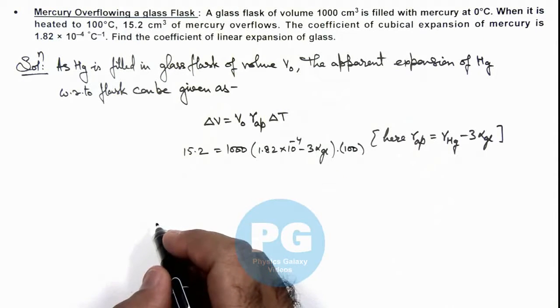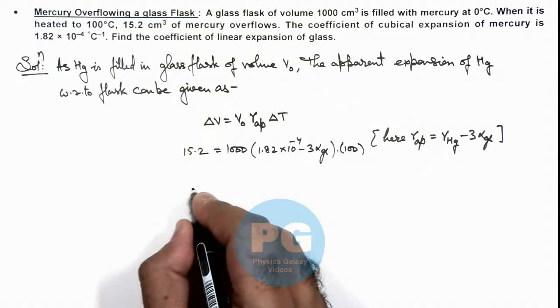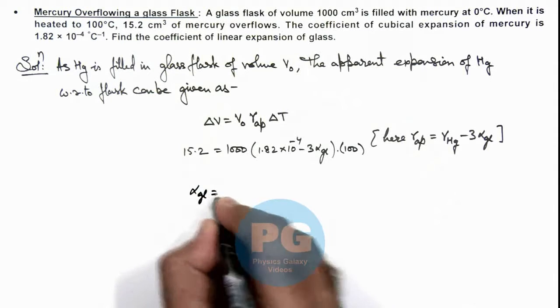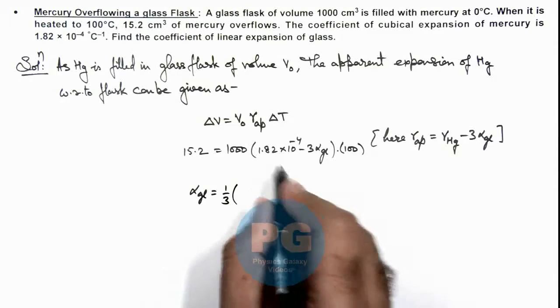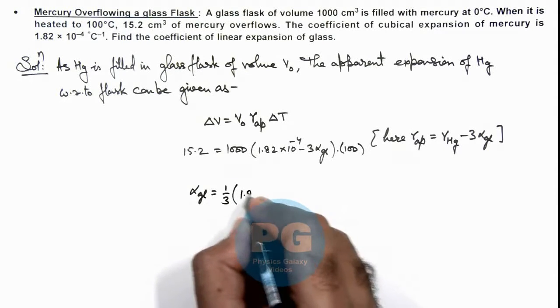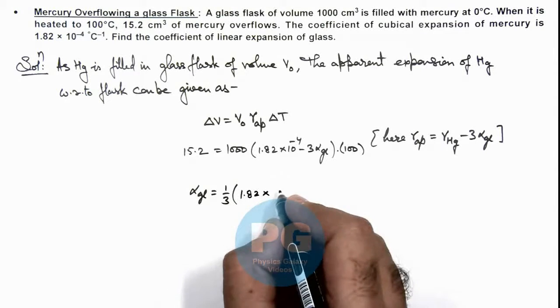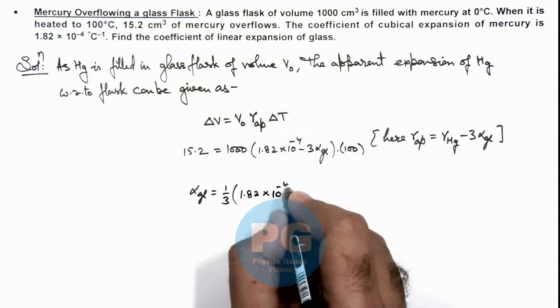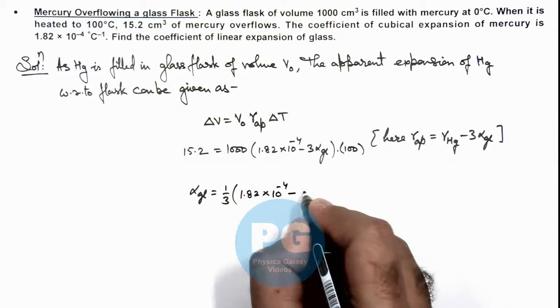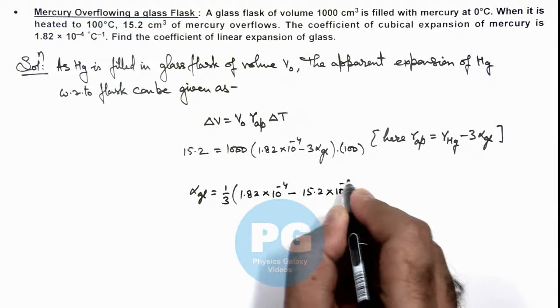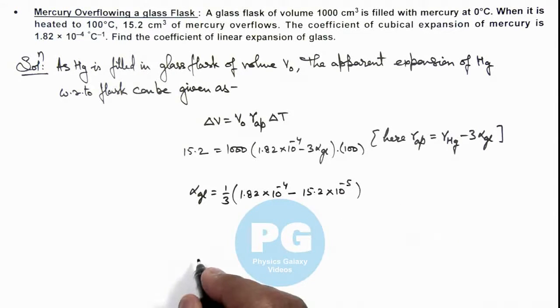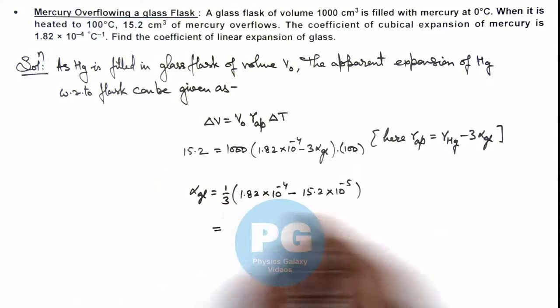So when we simplify this value, the value of α_glass we are getting is 1/3 times 1.82 × 10⁻⁴ minus 15.2 × 10⁻⁵. Now, in this situation you can rearrange the terms. This will give you the final result on simplifying this.